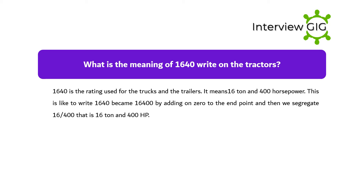What is the meaning of 1640 written on tractors? 1640 is the rating used for trucks and trailers. It means 16 tonnes and 400 horsepower. This is written as 1640, which becomes 16400 by adding a zero to the end, and then we segregate 16 from 400, giving 16 tonnes and 400 HP.